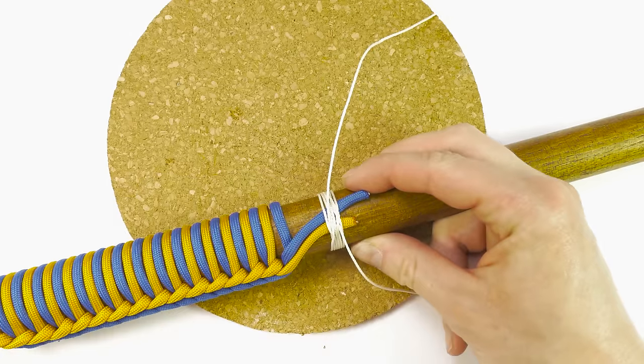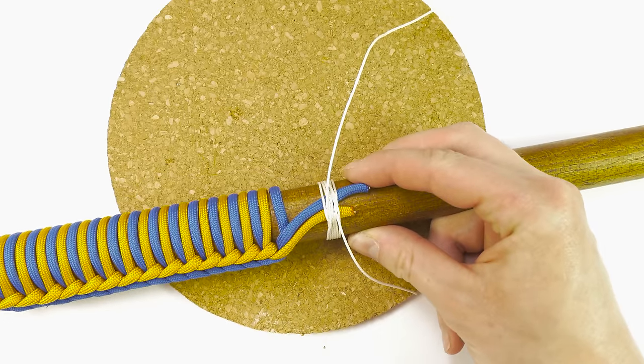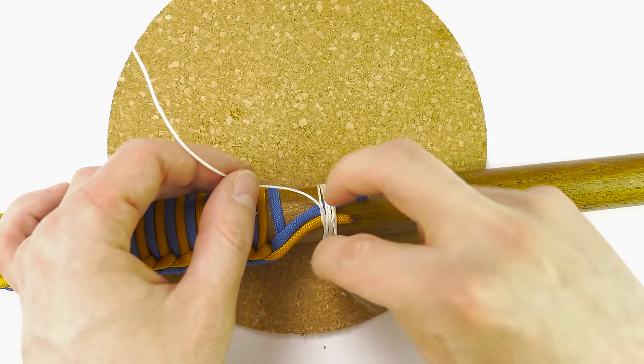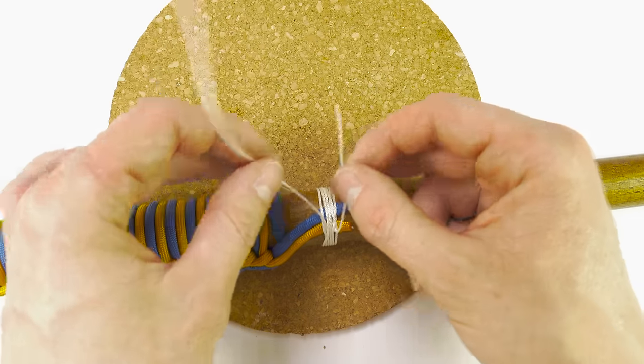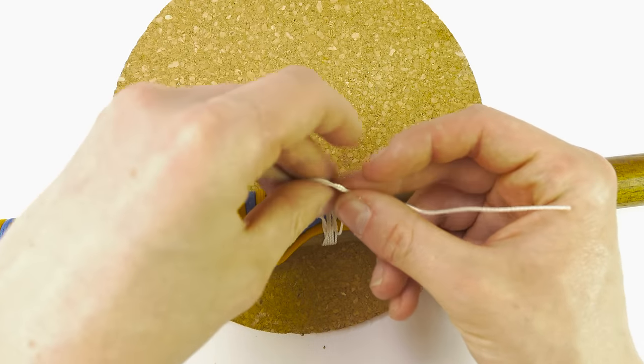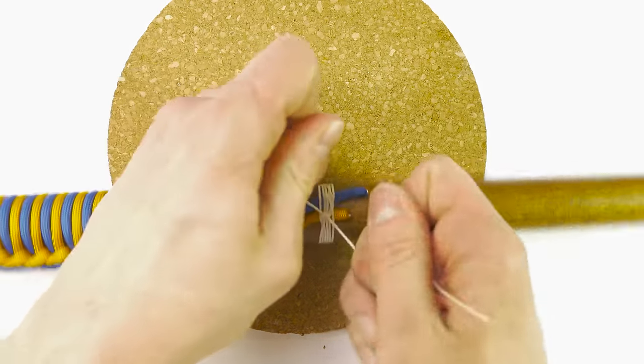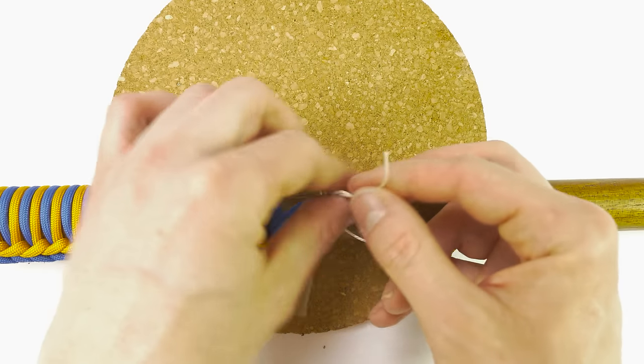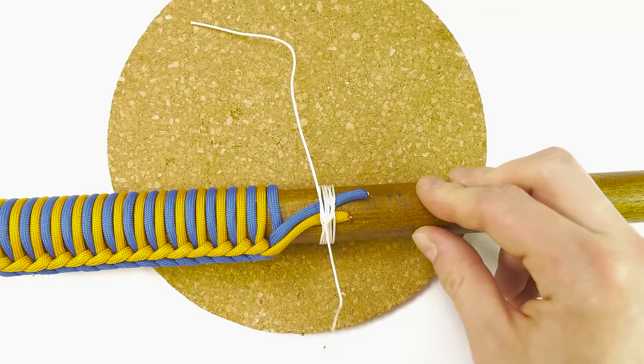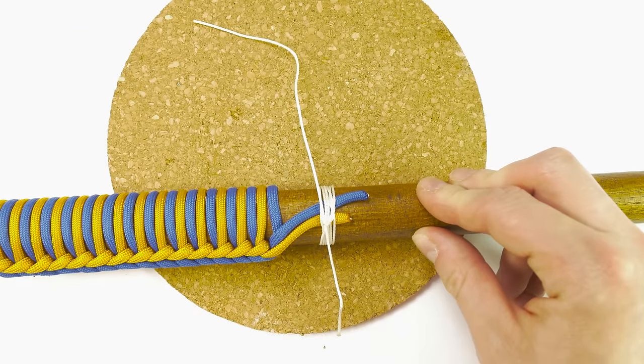And with this we got a fairly secure binding. Now you can further secure it by simply tying a square knot with both of the ends. And you have a secure binding for the end of your wraps.